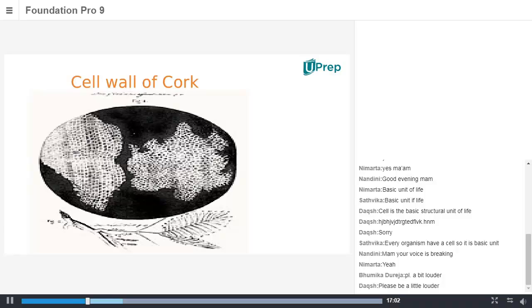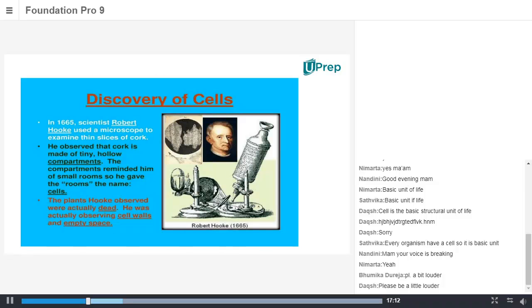Now surprisingly, what Robert Hooke observed and announced as cell is not exactly cell. Take a look at the statements over here. Actually what Robert Hooke observed was cell wall of the cell, which is nothing but a dead material. Okay, so this is the brief account of who first discovered cell but not actually the living cell.